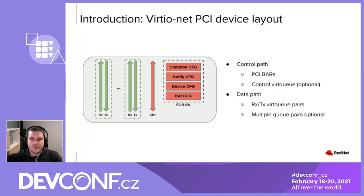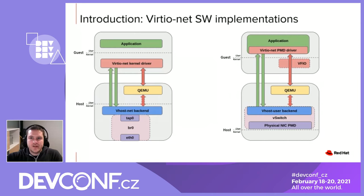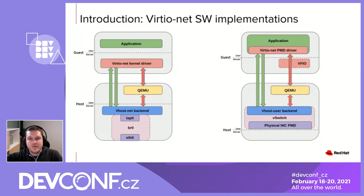Now that we have a better idea of the layout of Virtio Net devices, let's see how it is handled in software. We can see two possible uses of Virtio Net in the scope of virtualization. On the left, we have a full kernel solution where the kernel Virtio Net driver is used, providing a net device to the guest. On the other side, we have the vhost backend which implements device handling of the data path and lives in the kernel. In this solution, QEMU handles the control path — both the PCI bar and the control virt-queue — and translates it into the vhost kernel protocol to configure the backend. On the right side, we have a full user space solution with DPDK Virtio Net PMD in the guest user space and a DPDK vhost user backend in the host user space. As in the previous solution, QEMU handles the control path, but this time translates it into the vhost user protocol.